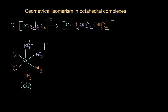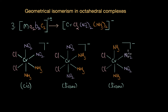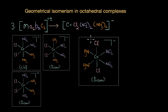In the trans isomers, one pair of ligands is placed opposite to each other. We can have the nitro groups opposite to each other, or the ammonia ligands opposite to each other, or the chloride ions opposite to each other — giving three different trans isomers.